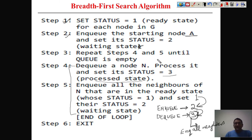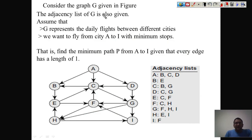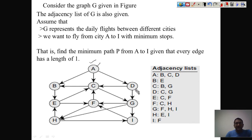Let us apply these steps to a graph. This example graph represents a real-life problem — it represents one scenario. The graph represents daily flights between different cities. These nodes represent cities of any country, and edges represent available flights. If there is an edge from A to D, it means a flight is available between those two cities.